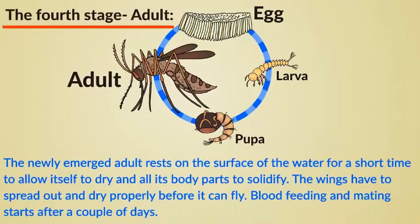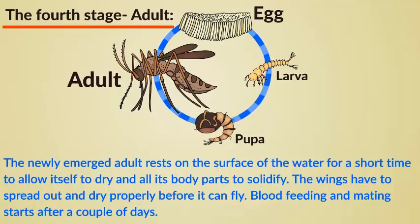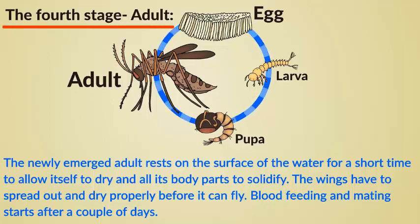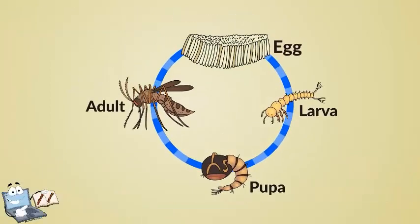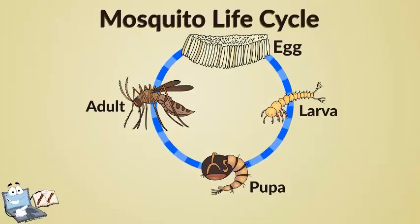The fourth stage: adult. The newly emerged adult rests on the surface of the water for a short time to allow itself to dry and all its body parts to solidify. The wings have to spread out and dry properly before it can fly. Blood feeding and mating starts after a couple of days. This is the full diagram of a mosquito life cycle.